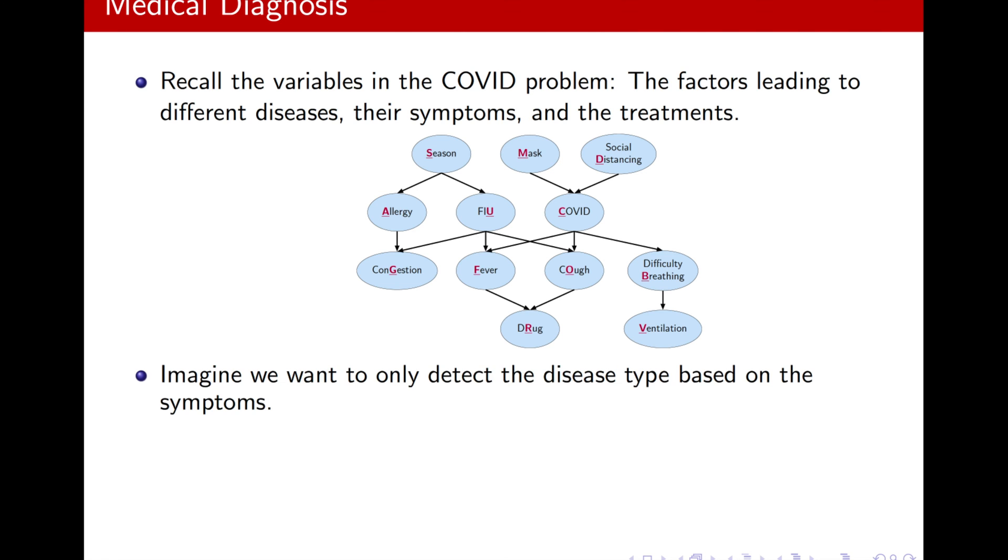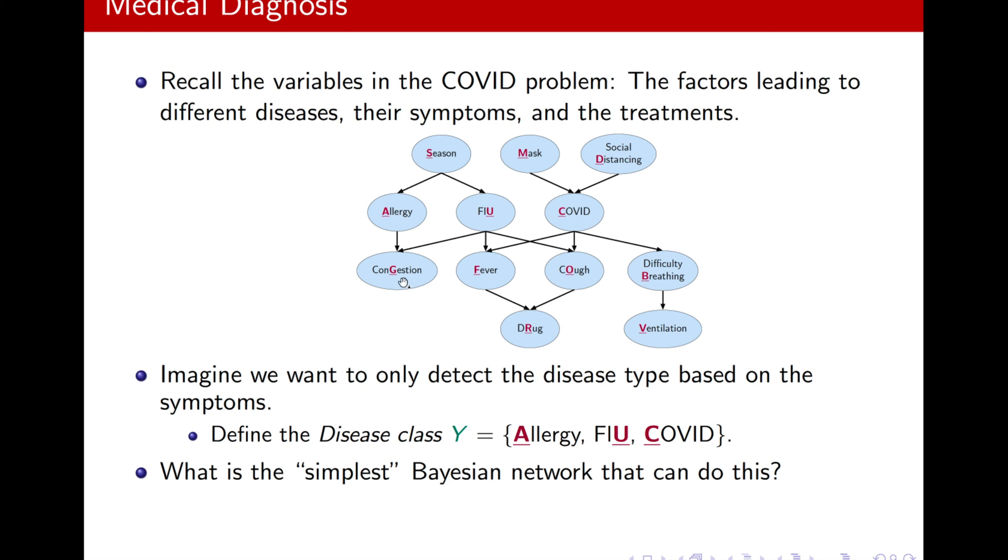But what if we just had a way simpler question? Imagine we want to only detect the disease type based on the symptoms. So, we can define a disease class: allergy, flu, COVID, and then accordingly, we want to look at the symptoms. An individual comes to you and they say, like, I have this or that symptom, and then you want to determine the likelihood of the disease.